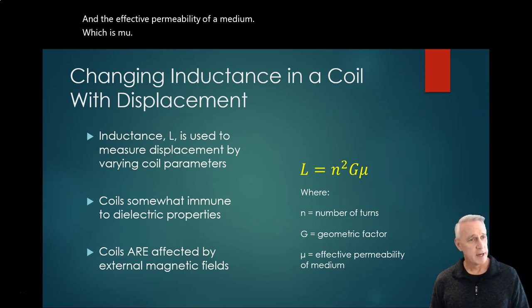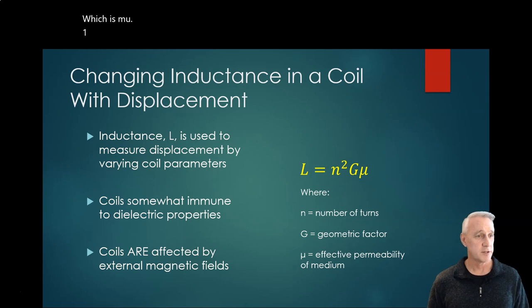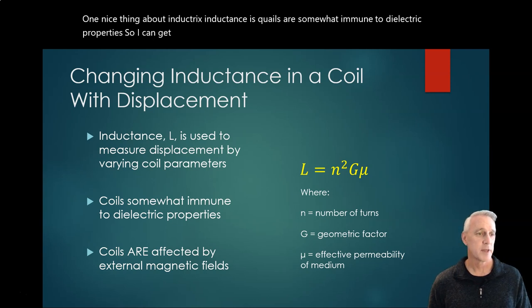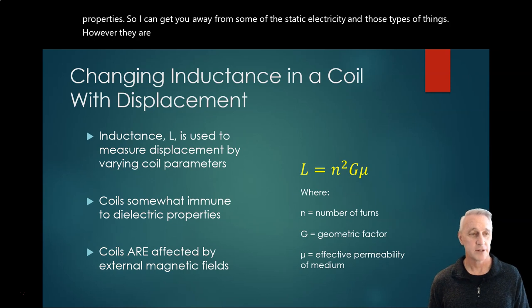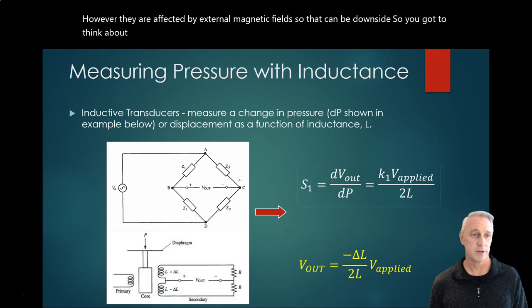One nice thing about inductance is coils are somewhat immune to dielectric properties, so it gets you away from static electricity and those types of things. However, they are affected by external magnetic fields, so that can be a downside. You've got to think about the application and what you need.